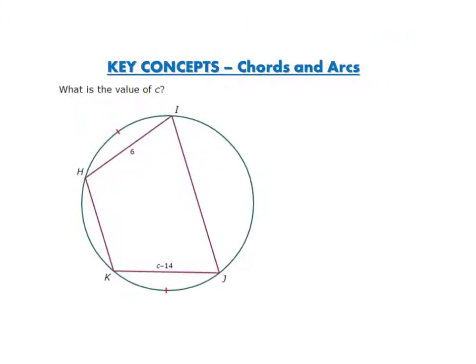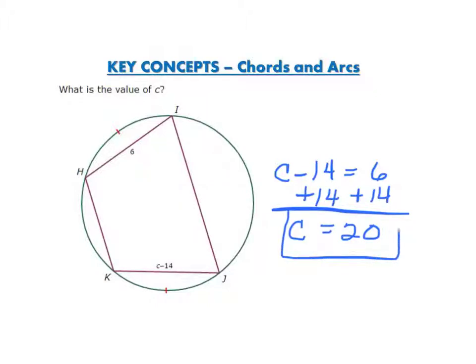This question asks, what is the value of C? I have two equal chords. I know they're equal because the arcs each have one tick mark. So I just make these equal to each other. So I have C minus 14 equals 6. I add 14 to both sides, which gives me C equals 20. So the value of C is 20.